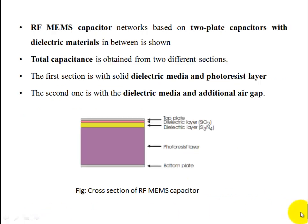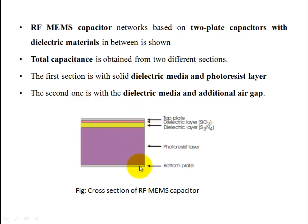In this configuration, we have a two-plate capacitor with a dielectric material in between. The capacitor consists of two sections, with the dielectric material forming one layer.